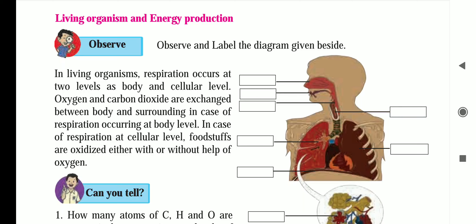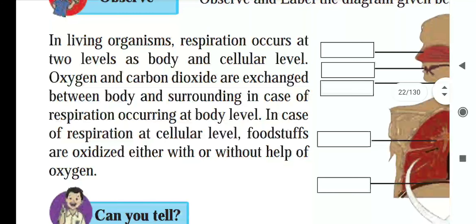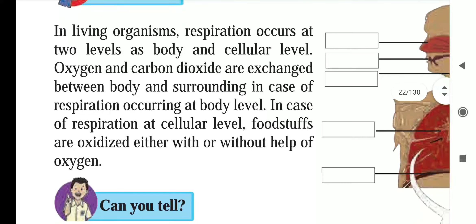In living organisms, respiration occurs at two levels: body level and cellular level. Oxygen and carbon dioxide are exchanged between the body and the surrounding in the case of respiration occurring at body level. It is a process of exchange of oxygen and carbon dioxide.